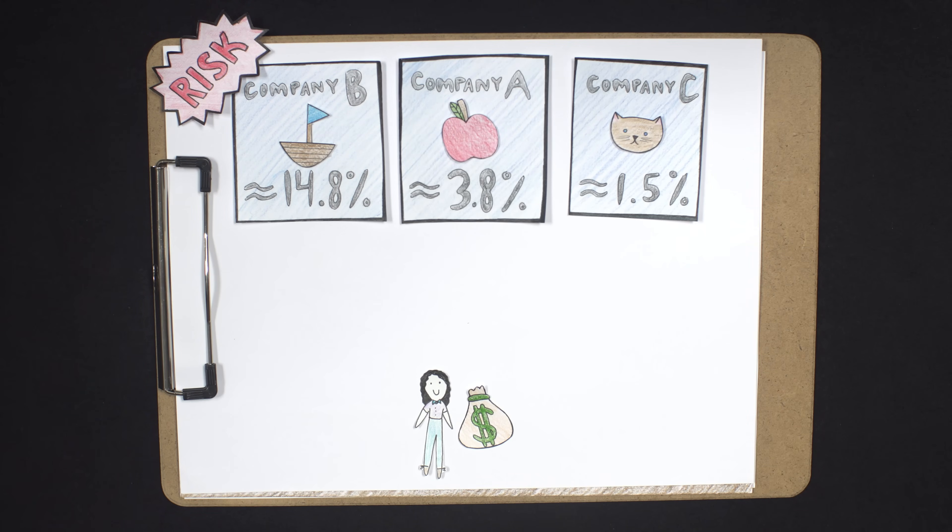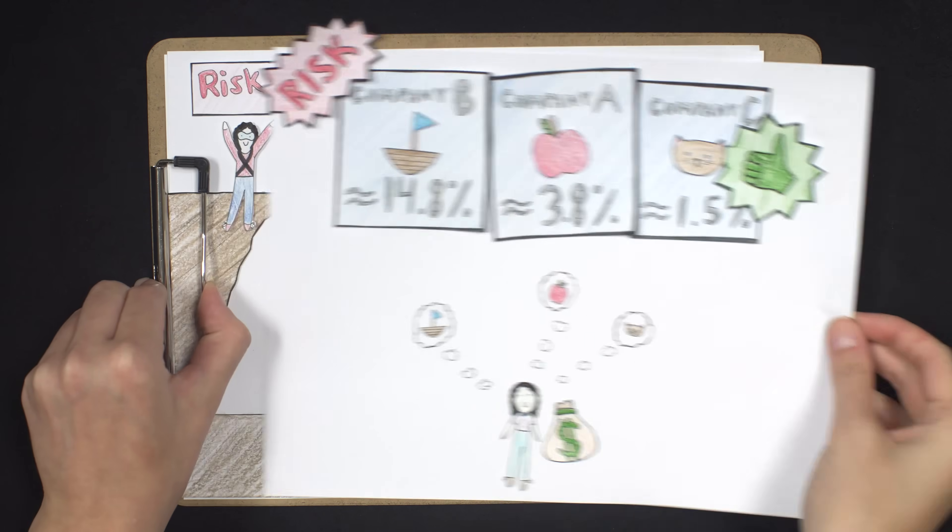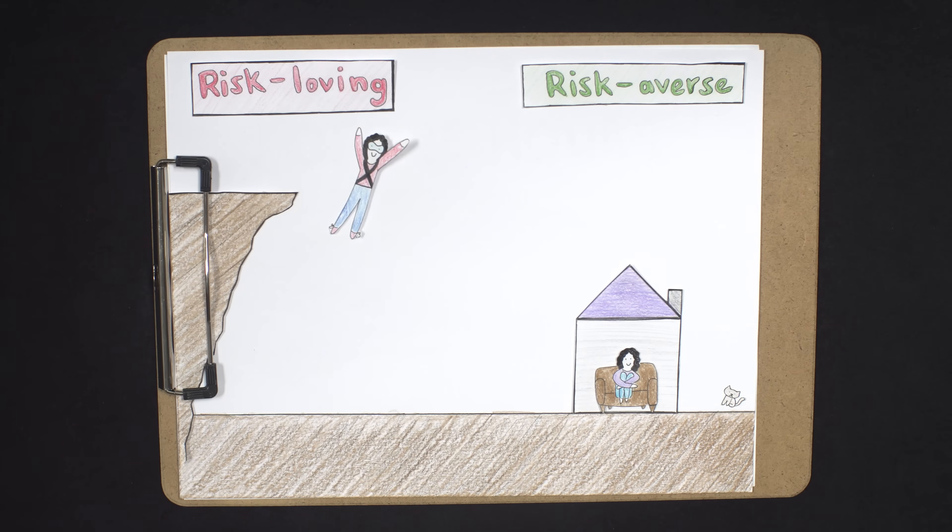Company C, on the other hand, is the least risky. So which company would you prefer to invest in? Well, there isn't actually a clear right answer here. It in part depends on your preference for risk.